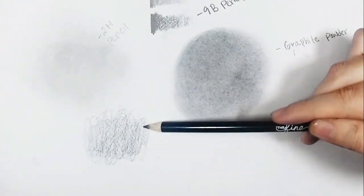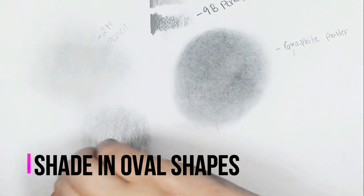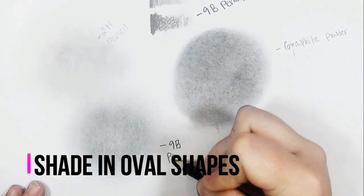We want the shaded areas to be as smooth as possible. That is why oval shaped motions are best because there are no stopping and starting points anywhere on the paper.